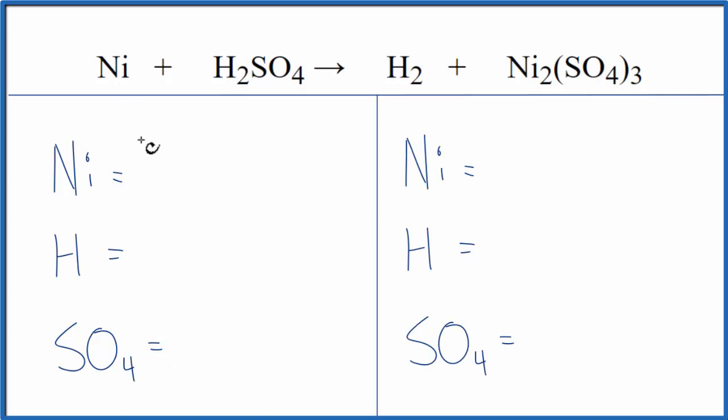So let's count the atoms up. I have nickel, two hydrogens, and then one SO4. Over on the product side, I have two nickel, two hydrogen, and then three of these SO4s. So that makes it very easy to count things up.